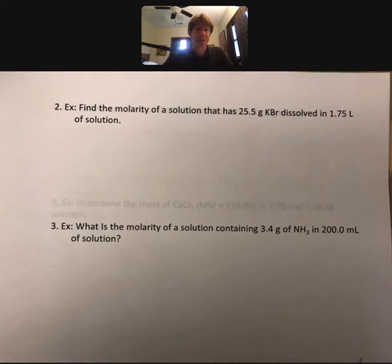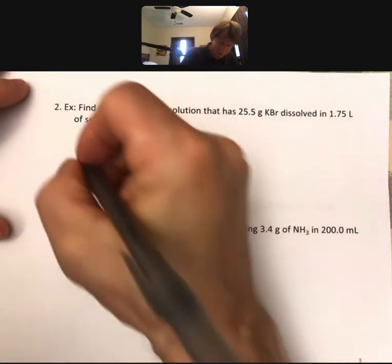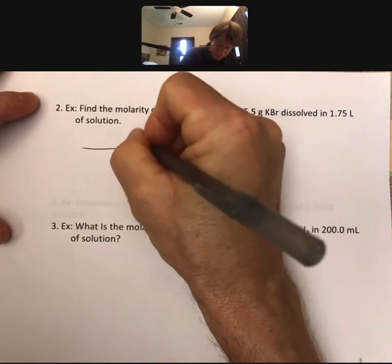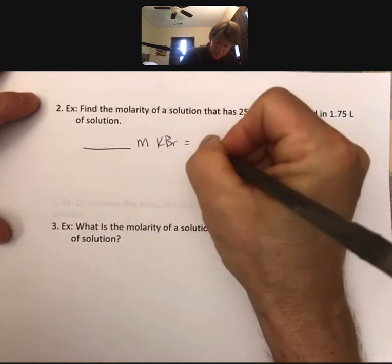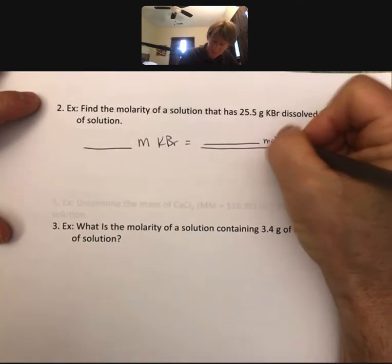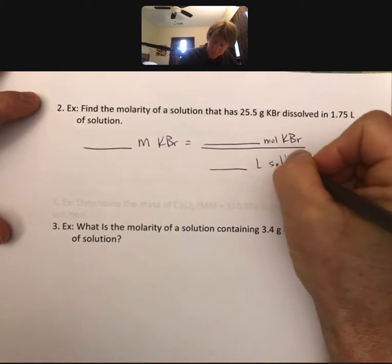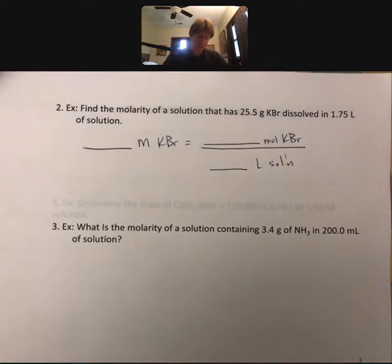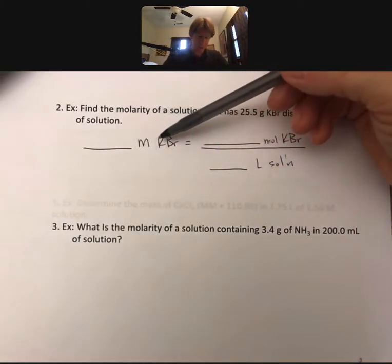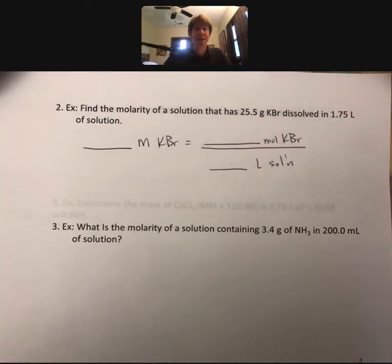Now, like so many things in this course, there's many ways to do this calculation, but my way to do it is to sort of set up a fill in the blank. My molarity of potassium bromide equals moles of potassium bromide over liters of solution. And then fill in two of these blanks and calculate the third.